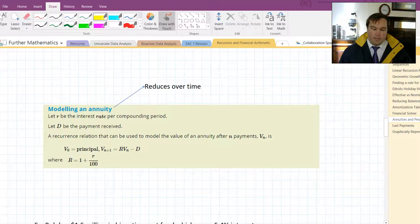Here's an annuity. An annuity is the one that grows or decreases over time. The annuity is modelled with this here, with R being the percentage increase decrease and D being the difference each time.